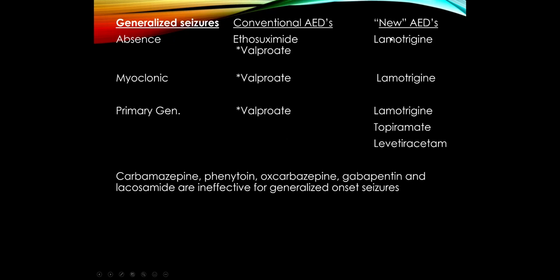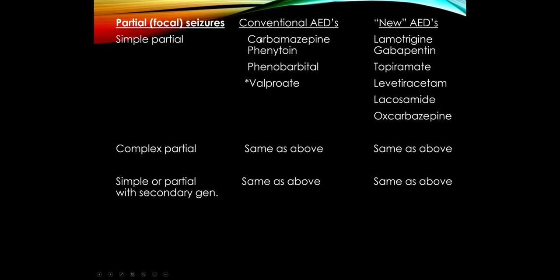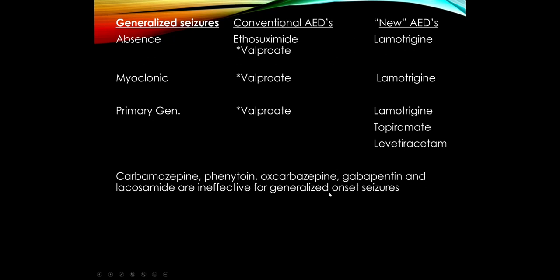Several of the newer anticonvulsant medications also work for generalized seizures. In general, the newer seizure medications tend to be more broad spectrum — they work for both focal and generalized onset seizures — whereas many older ones like carbamazepine, phenytoin, and gabapentin really only work for partial or focal onset seizures. It's important to remember which medications work for focal only, generalized only, or both.